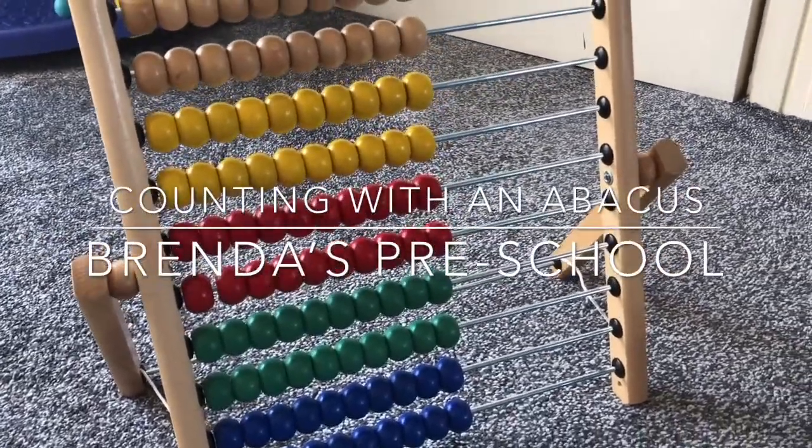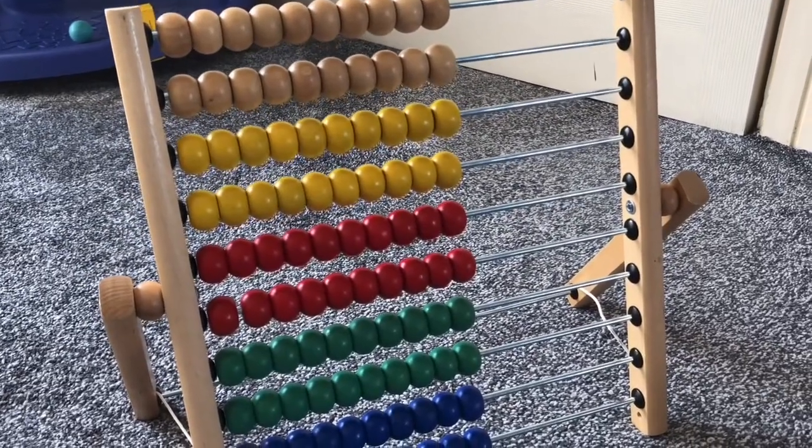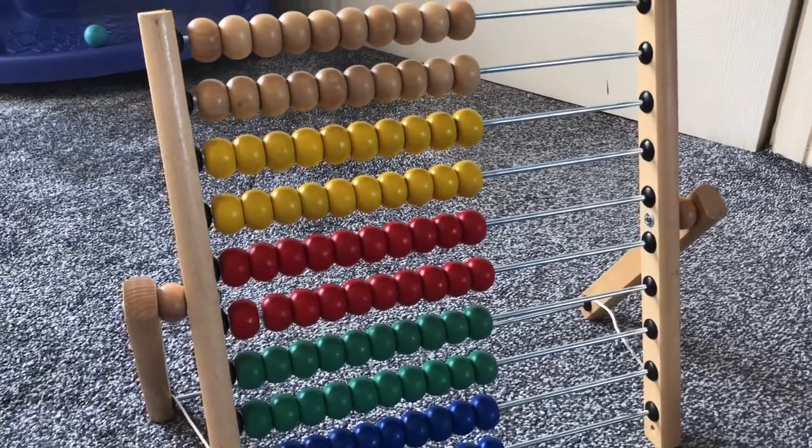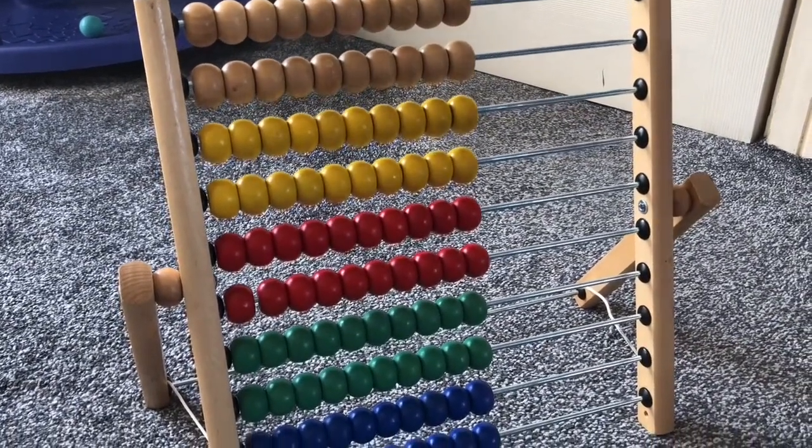Hi everybody, welcome to Brenda's homeschool. So today I'm just going to show you how to use an abacus. I'm going to do it with a two-year-old child. I'm just going to start learning how to count and we can also learn our colors through this activity as well.